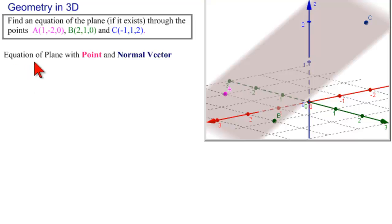Now, we know how to find the equation of a plane if we have a point and a normal vector. Well, we have plenty of points. We have three, but we don't have the normal vector. How can we find a normal vector?